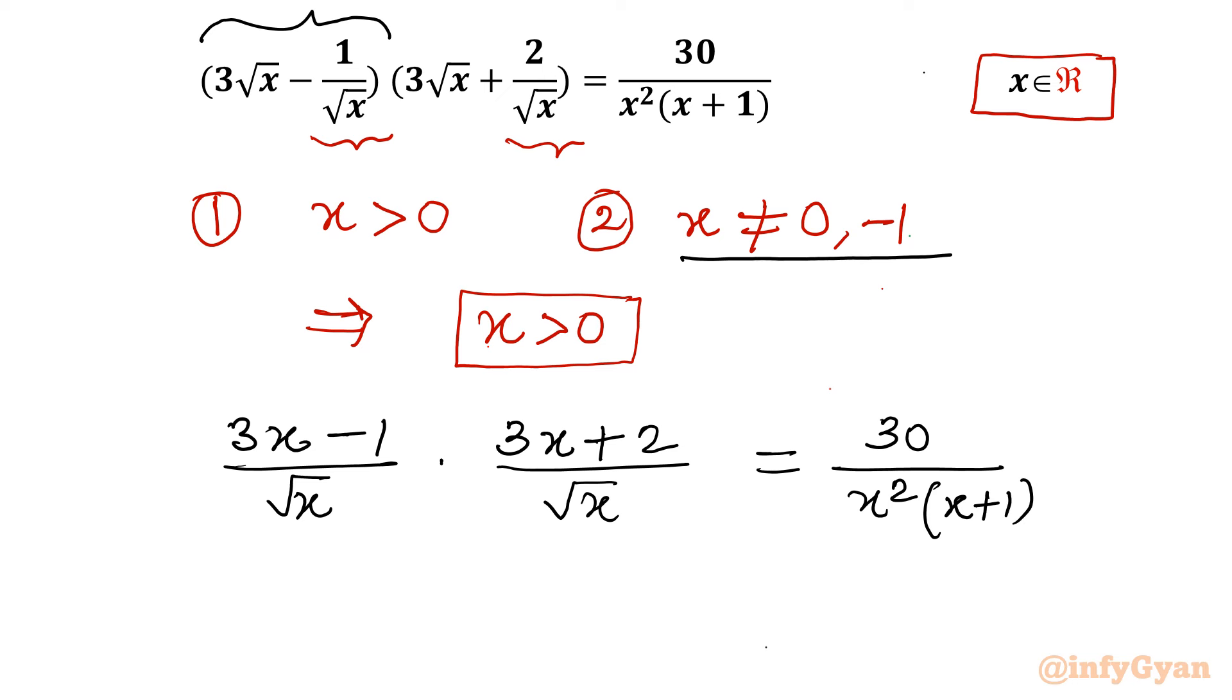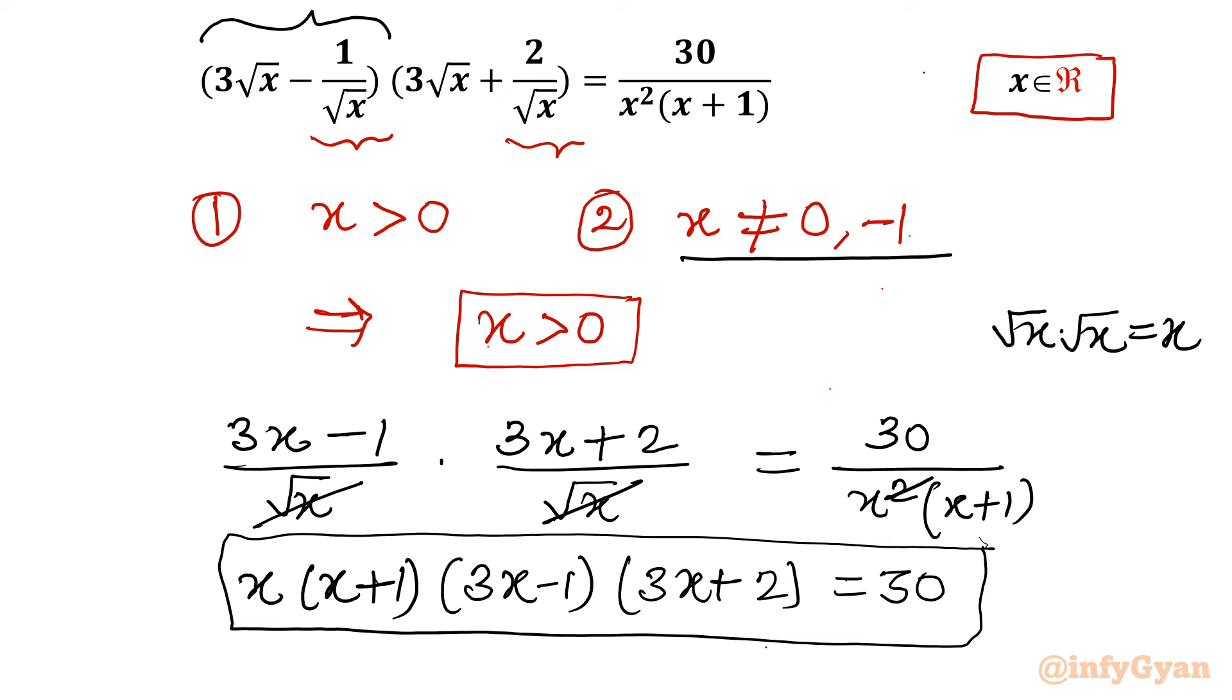Now x is neither 0 nor -1. So first I will cancel this power with these two square roots. √x times √x is x, so one x will be cancelled out. Now I will cross multiply because x is not 0 and not -1. So I can write x(x+1)(3x-1)(3x+2) = 30. This is our quadratic equation.